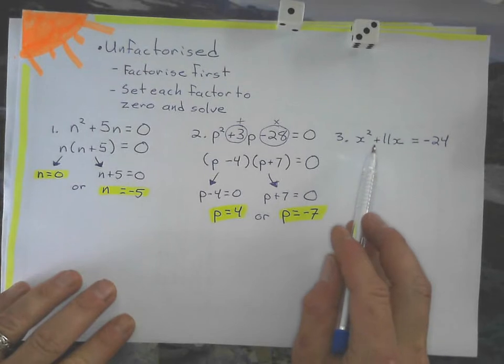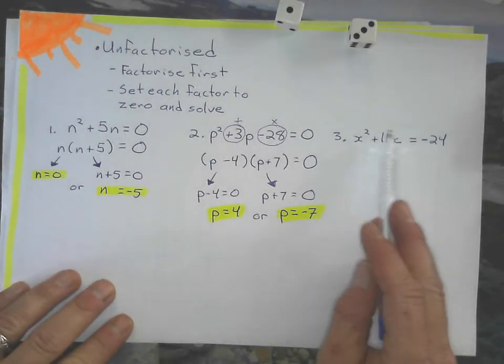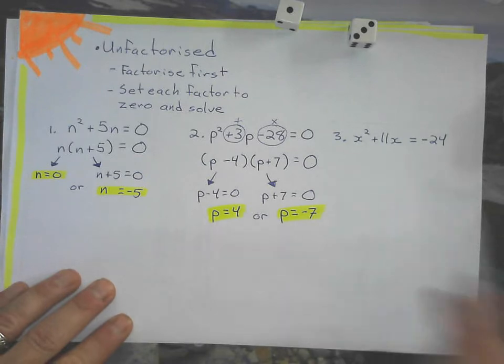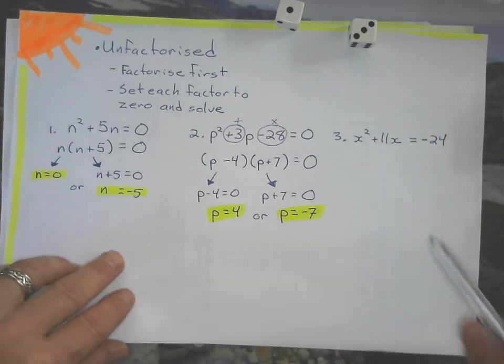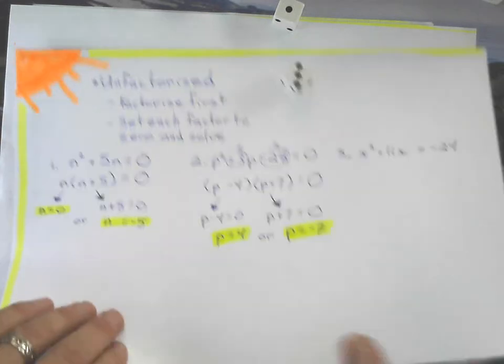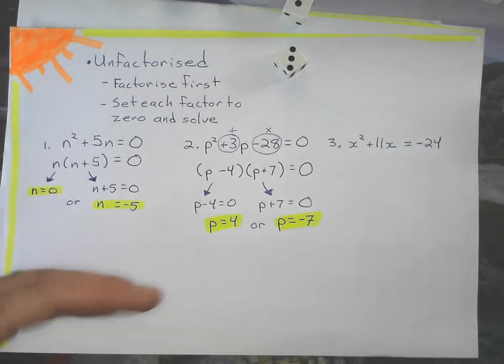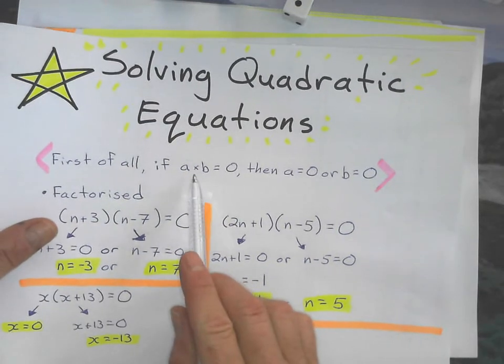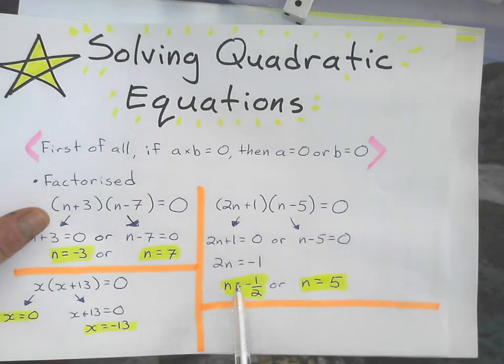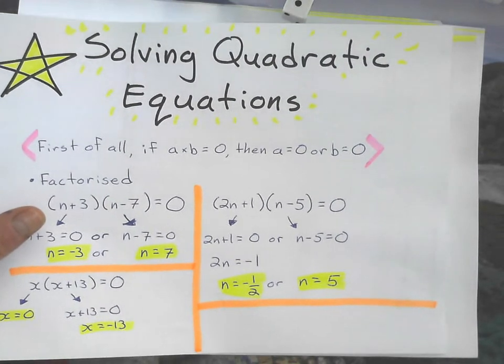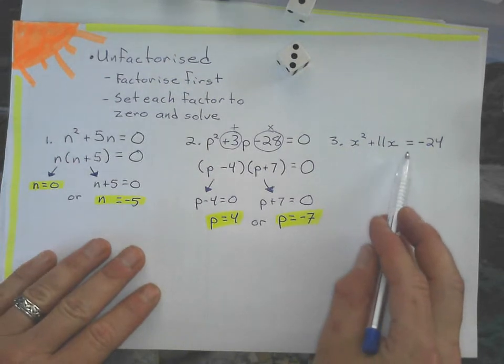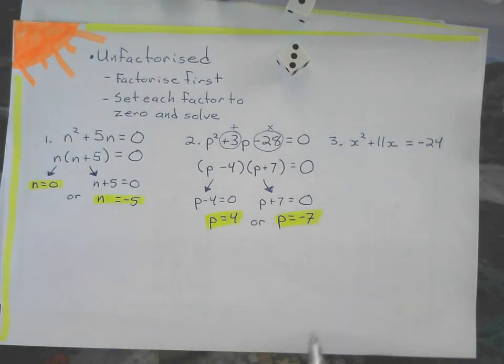One more example to look at is when the equation before we start out is not set to zero. If I'm going to solve any quadratic equation, I have to have it set to zero, because of this rule. If it's not set to zero, I can't do my factorizing trick. So the first thing I need to do is rearrange this equation, set it to zero, and then factorize it.